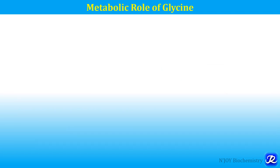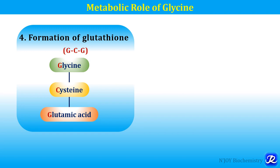The next metabolic role of glycine is formation of glutathione. Glutathione is a biologically important tripeptide synthesized from three amino acids — glycine, cysteine, and glutamic acid. Glutathione is a component of the important antioxidant enzyme glutathione peroxidase, which has a vital role in scavenging free radicals from the biological system. It also maintains the integrity of the RBC membrane.